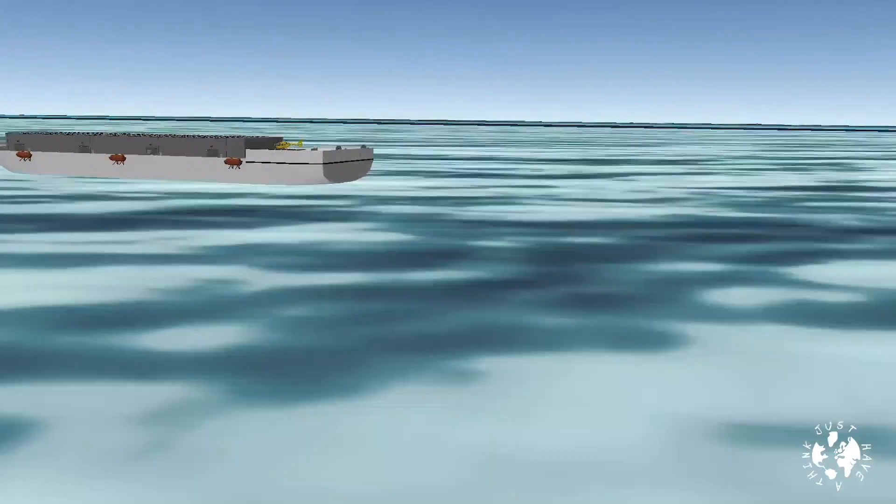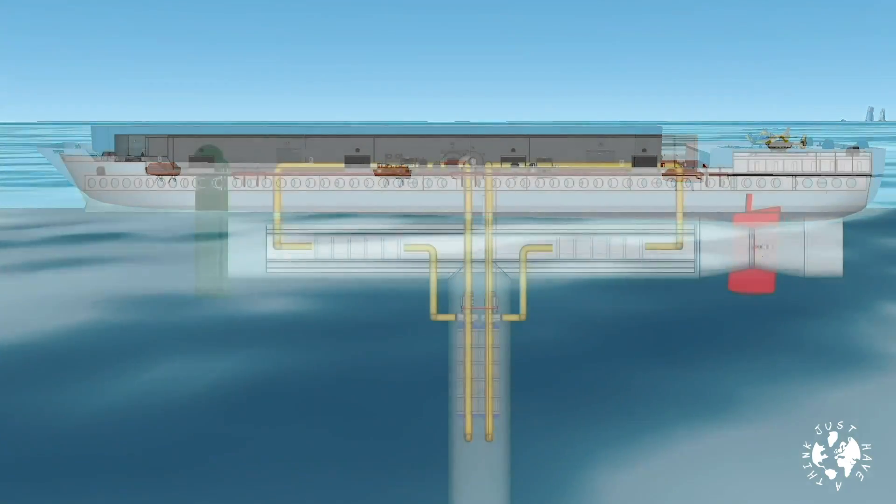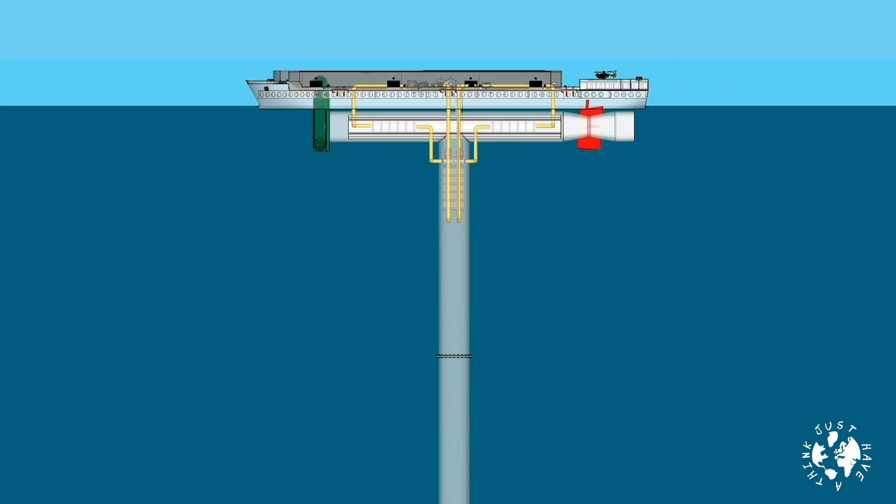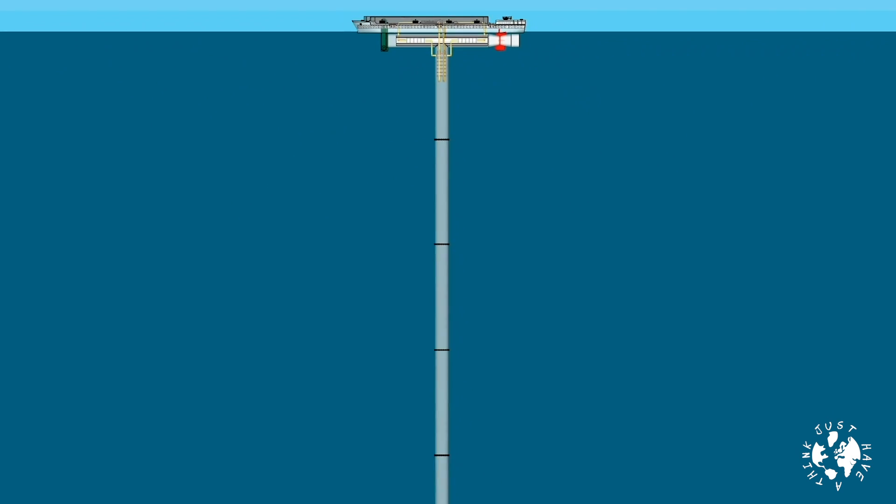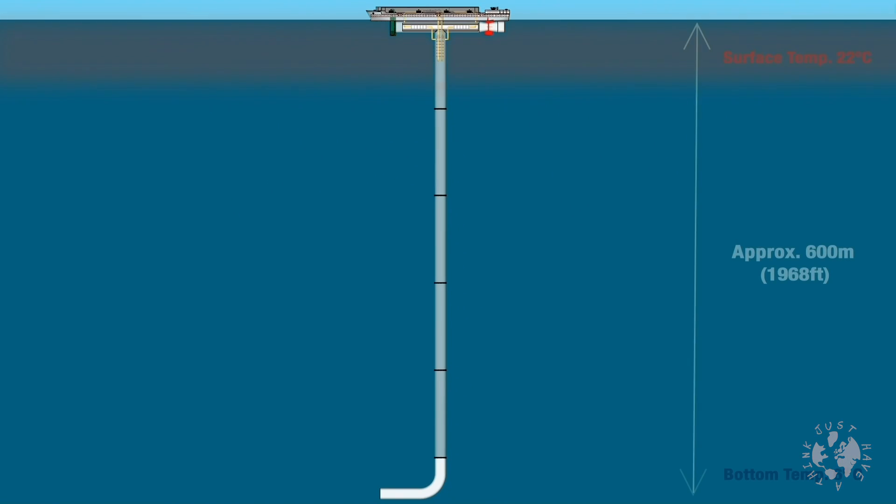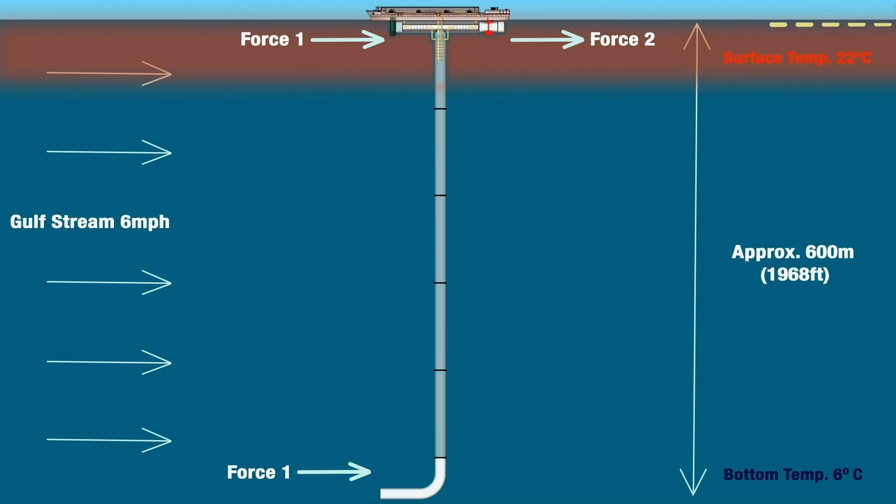To discover the enormous potential contained within, we have to take a look underneath. The open sea here is up to a thousand meters deep, that's well over 3,000 feet. At the bottom, the water is a very chilly six degrees Celsius, but on the surface it can be more than 22 degrees or 72 degrees Fahrenheit.